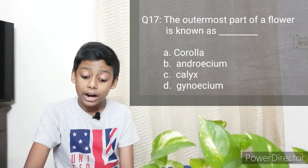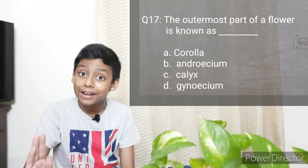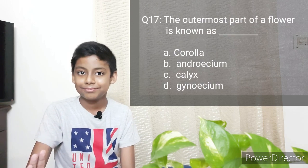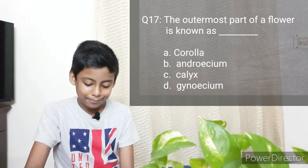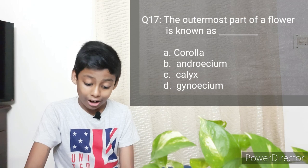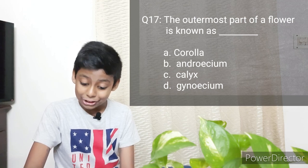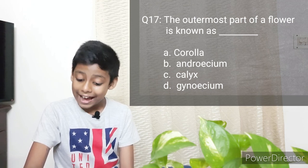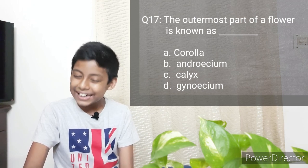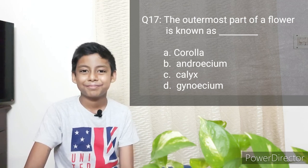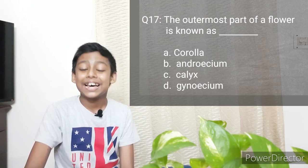The next question is: The outermost part of a flower is known as blank. Options: Corolla, Androecium, Calyx, Gynaecium. The answer is Calyx.